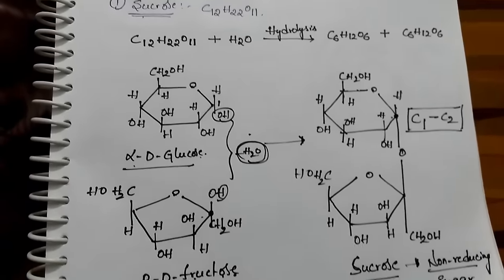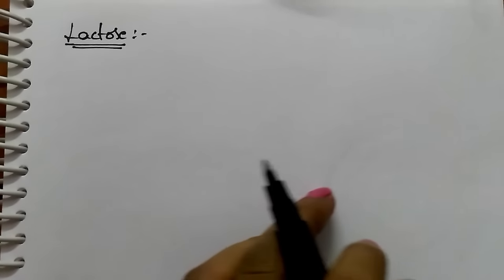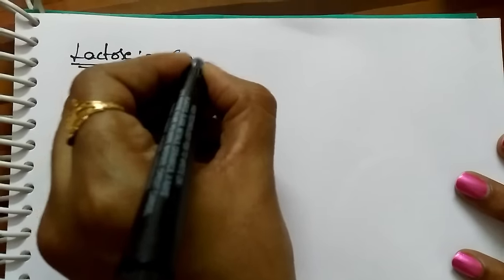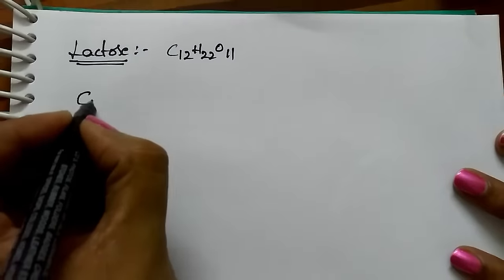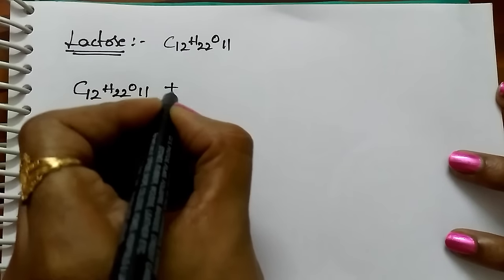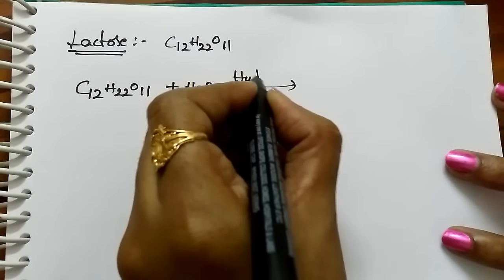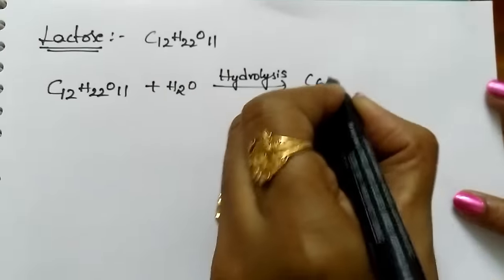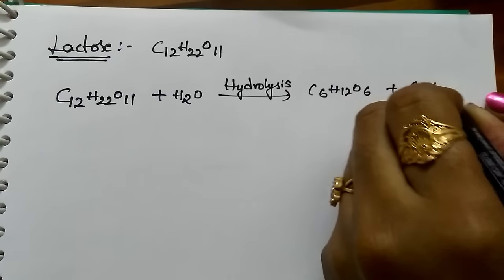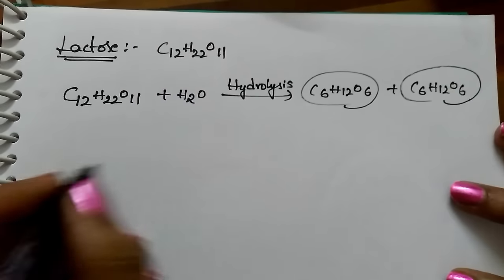The next disaccharide is lactose. Lactose is present in cow milk as well as in human milk. In cow milk its percentage is about four to six percent, and in human milk it varies from five to eight percent. Lactose upon hydrolysis gives two units — one is beta-D glucose and another one is beta-D galactose. The molecular formula of lactose is also C12H22O11.